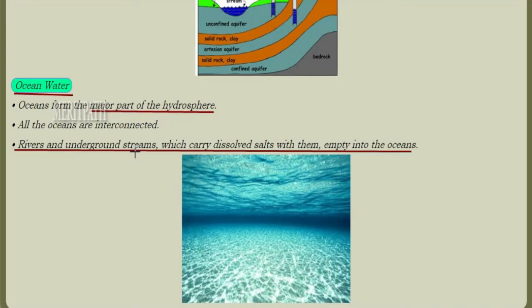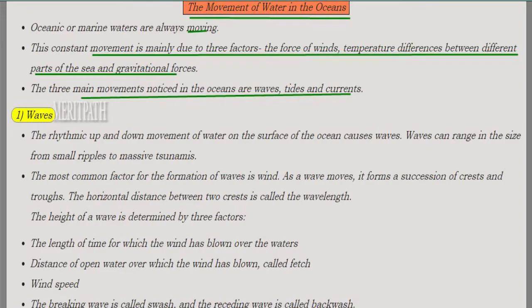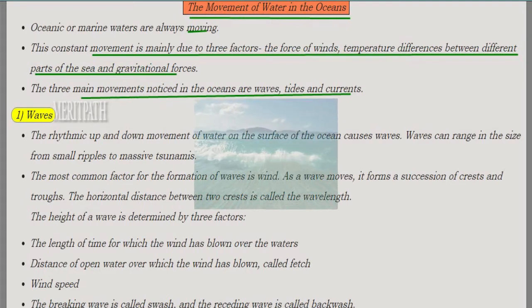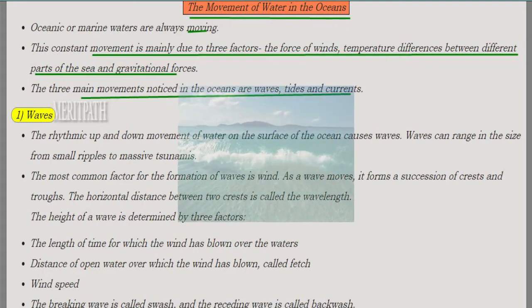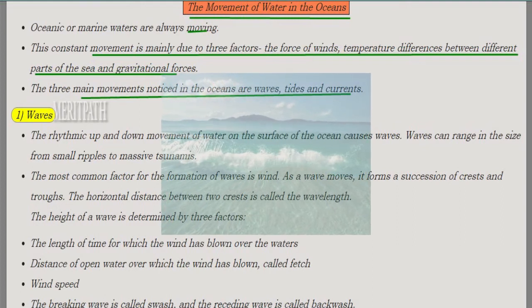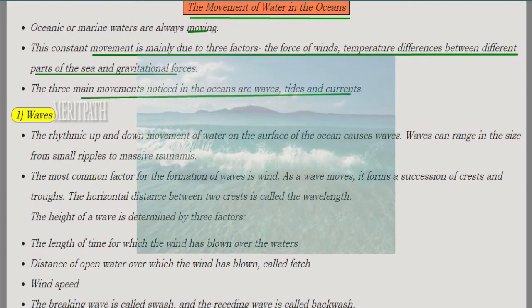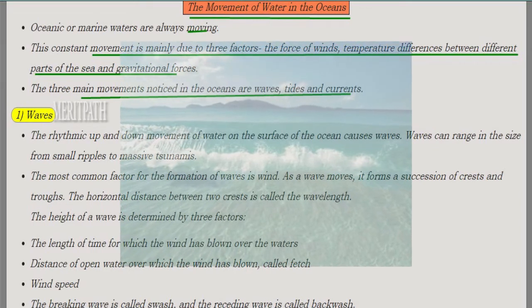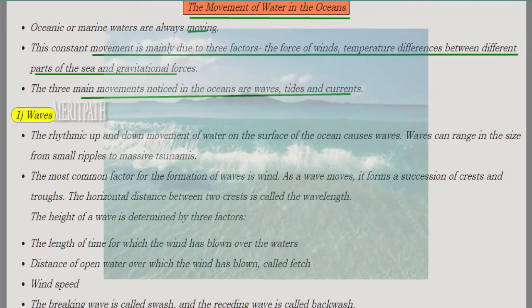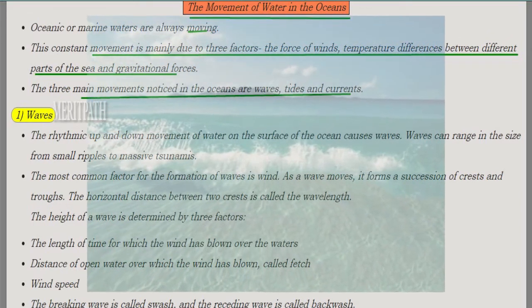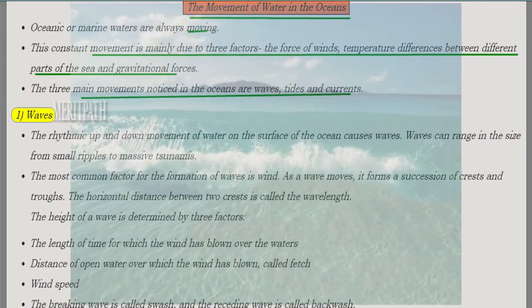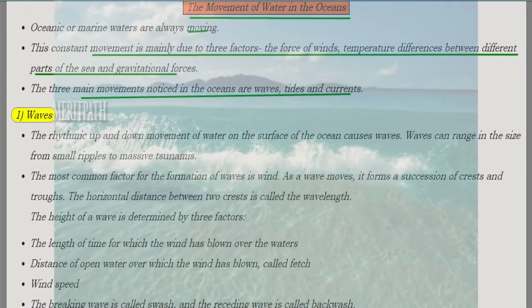Oceans form the major part of the hydrosphere. Let's study about the movement of water in the oceans. Ocean water is always moving, and this movement is due to three factors: the force of the wind, temperature differences between different parts of the sea, and gravitational force. These movements in the oceans are noticed as waves, tides, and currents.